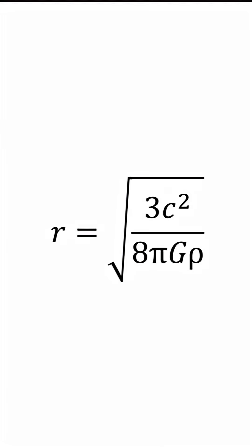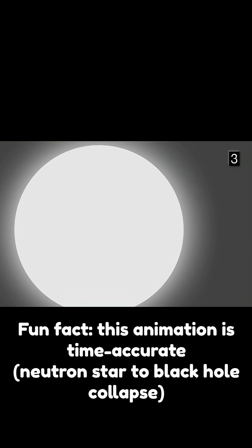And finally take the square root of the other side to solve for our radius. And this new equation allows us to choose any density, rho, to get how big a sphere we'd need for its own gravitational attraction to compress it into a black hole.